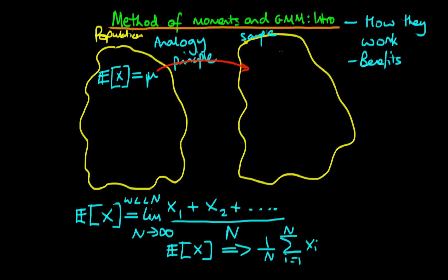In method of moments and generalised method of moments, that's exactly what we do. We replace our population moment condition by our sample equivalent, and that gives us an estimate of mu — which we call mu hat — equal to 1 over n times the sum from i equals 1 to n of xi, in other words, the sample mean. That's the case if we had just one parameter and one population moment condition, which would be an example of method of moments.